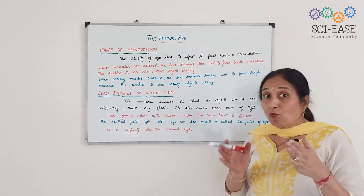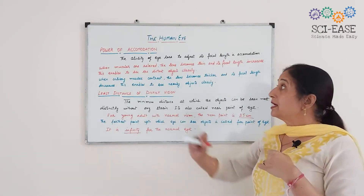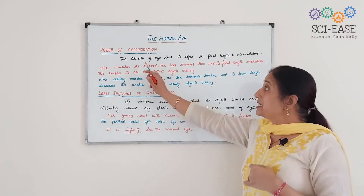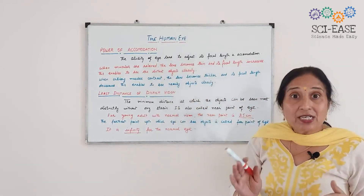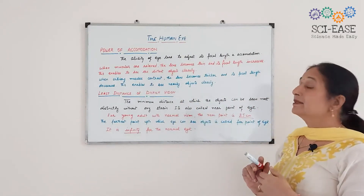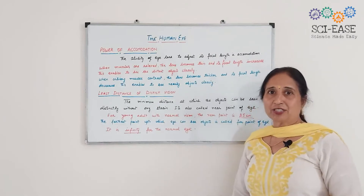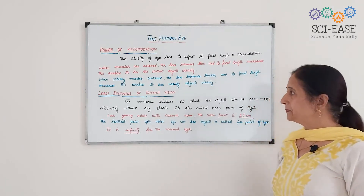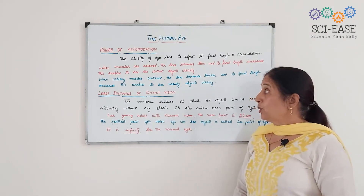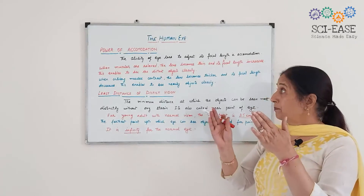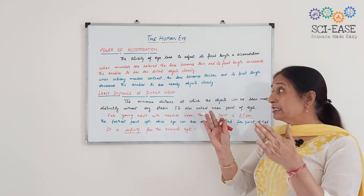So what is power of accommodation? The ability of the eye lens to adjust its focal length is known as power of accommodation.